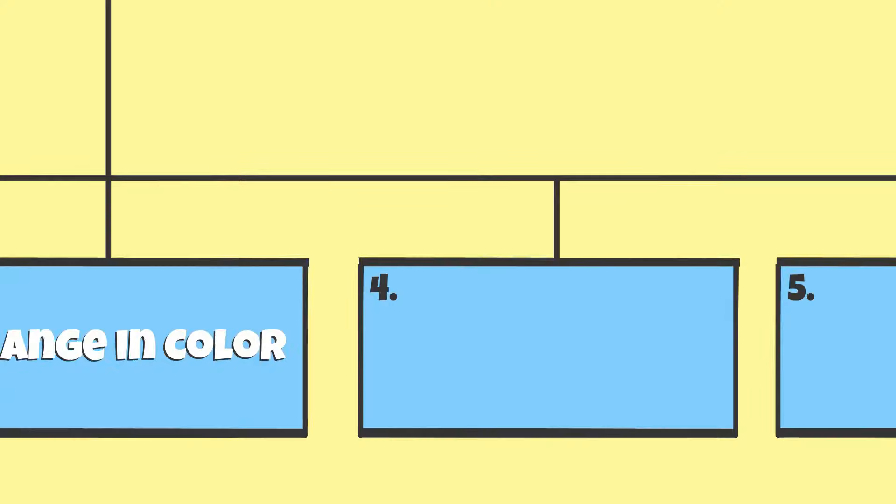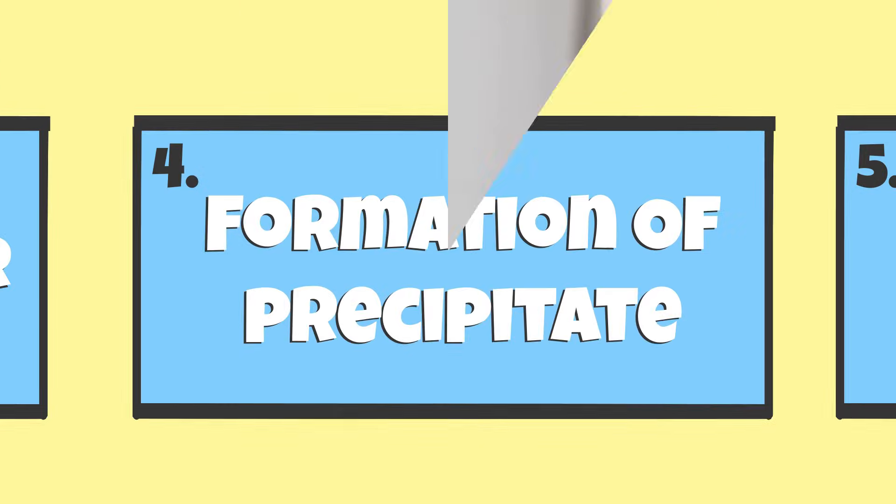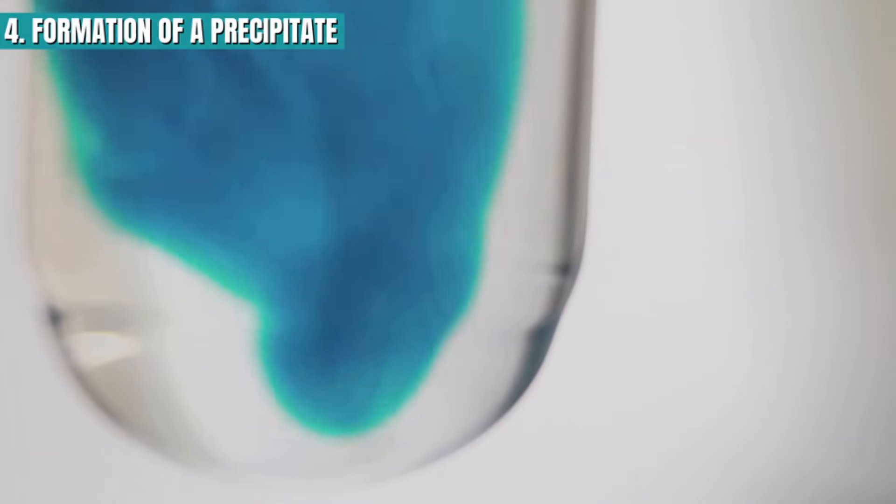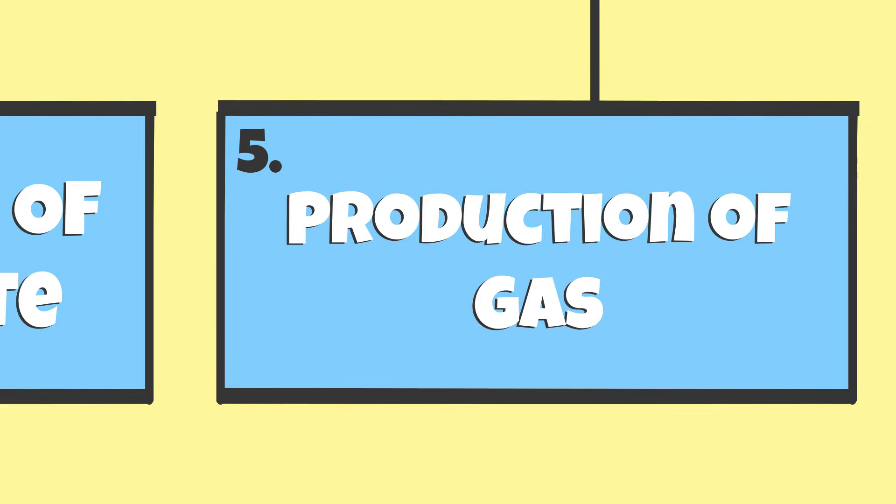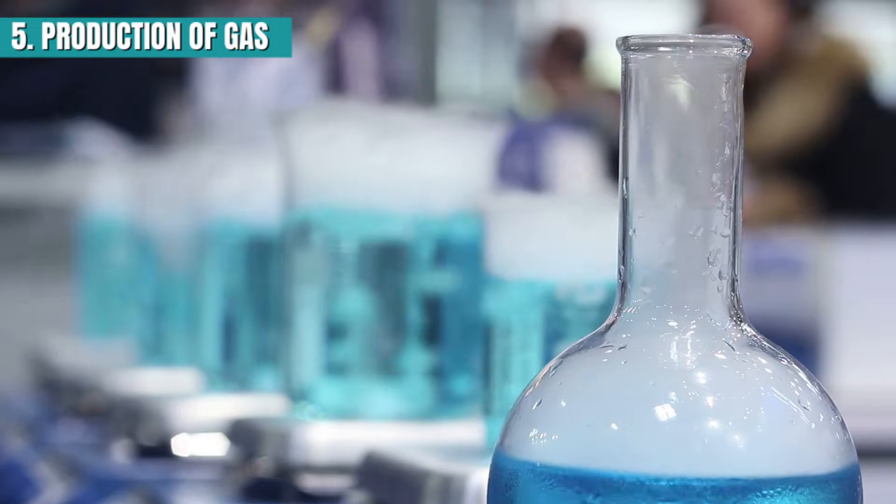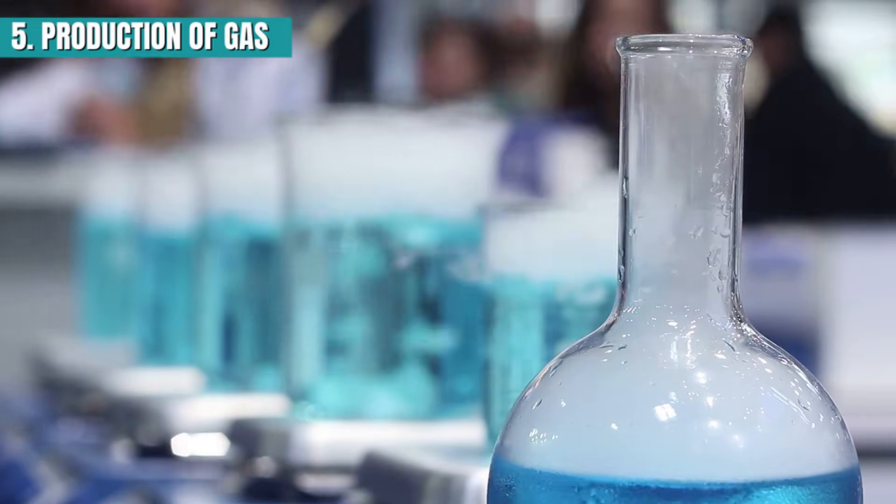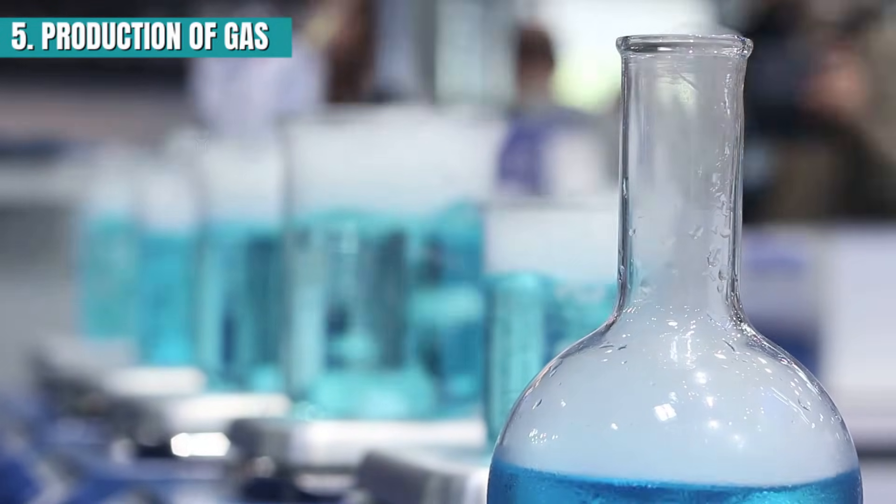The fourth sign is the formation of a precipitate. This usually happens when two liquid solutions chemically react with each other. The fifth sign is when gas is produced. In such chemical reactions, the product has a distinct smell or gaseous vapors become visible.